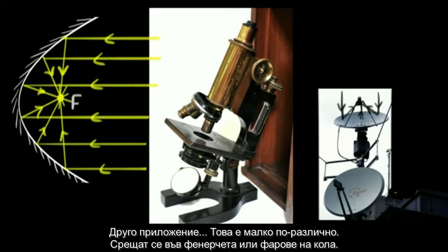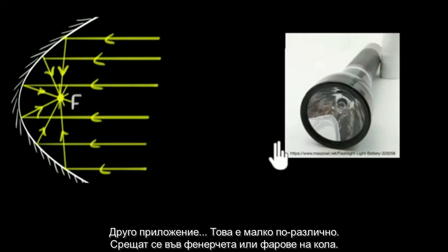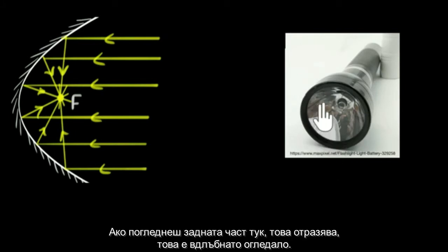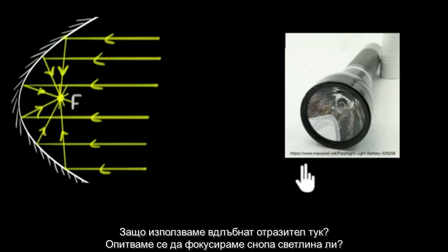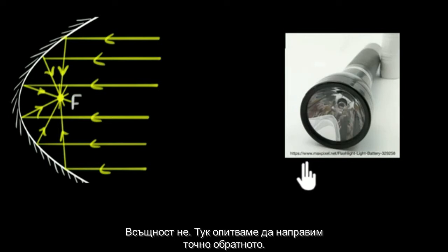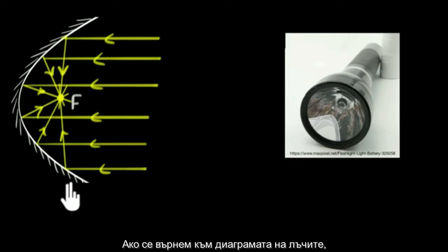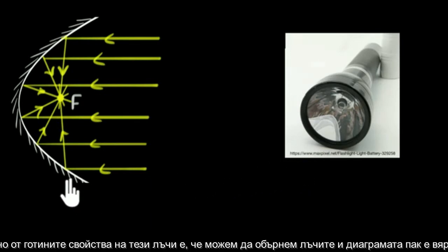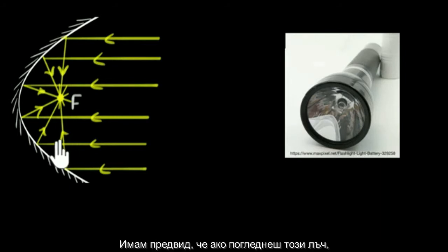Another application, which is a little different, is found in flashlights or headlights of a vehicle. If you look at the back part, there is a concave mirror reflector back there. But are we trying to focus the beam of light here as well? Actually, no — over here we are trying to do something exactly the opposite. If we come back to the ray diagram, one of the cool properties of these rays is that we can reverse them and the diagram still holds true.